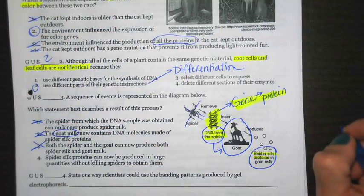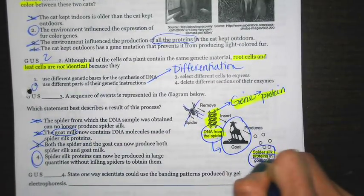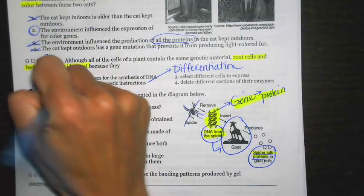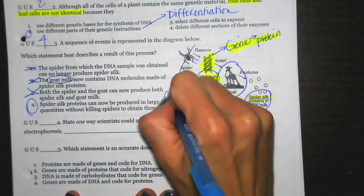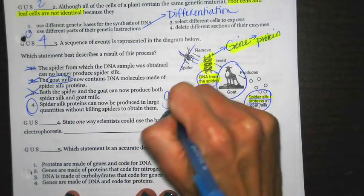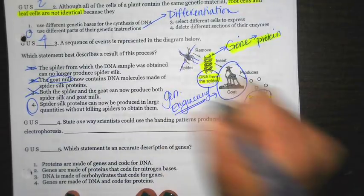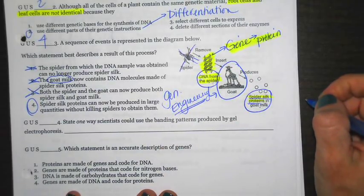Last one says, spider silk proteins can now be produced in large quantities without killing spiders to obtain them. And that's correct, right, because you're able to find those spider silk proteins inside of the goat milk. So all you have to do is milk the goat, and then you have your spider silk. That's going to be four. And also remember something I didn't mention. This is an example of genetic engineering, which I think is a topic many of us struggled with. So we're going to go over that again in a couple of questions.